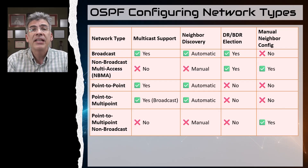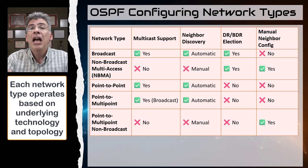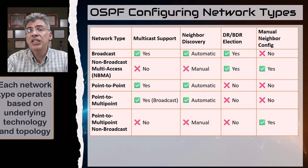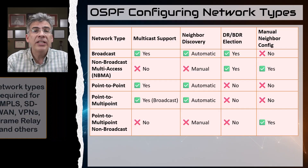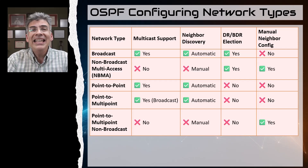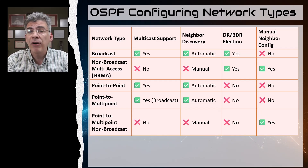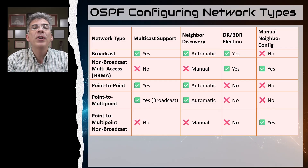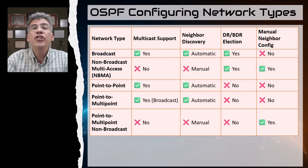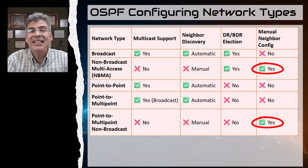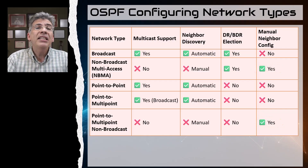In the previous video we went over the five different OSPF network types and explained in detail how each one operates based on the capabilities and topological arrangement of the underlying transport technology. The transport technology can include things like MPLS, SD-WAN, VPNs, frame relay, and others. Different topologies and technologies need different OSPF network type configurations. Here is a table that summarizes how OSPF behaves for each network type and what additional configurations may be necessary.